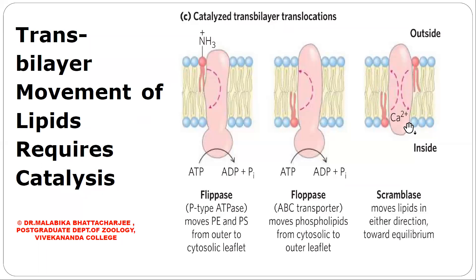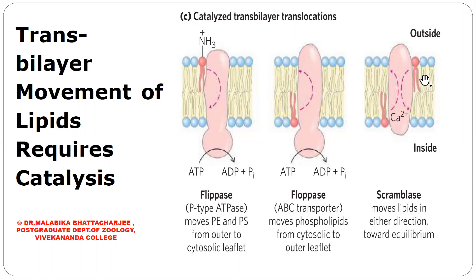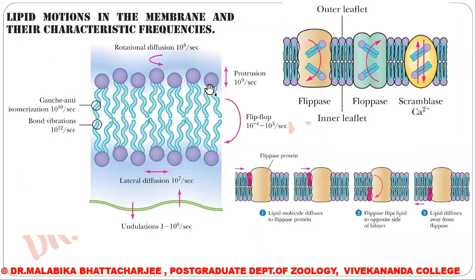The activity of scramblase has been seen to increase with an increase in calcium concentration. Whenever there is higher calcium concentration inside the cell — which may be due to cell injury or apoptosis — scramblase helps the movement of phosphatidylserine down its concentration gradient from the inner leaflet to the outer leaflet. The activity of scramblase is associated with cytoplasmic calcium concentration. The next slide shows the various categories of movements taking place within the lipid bilayer.